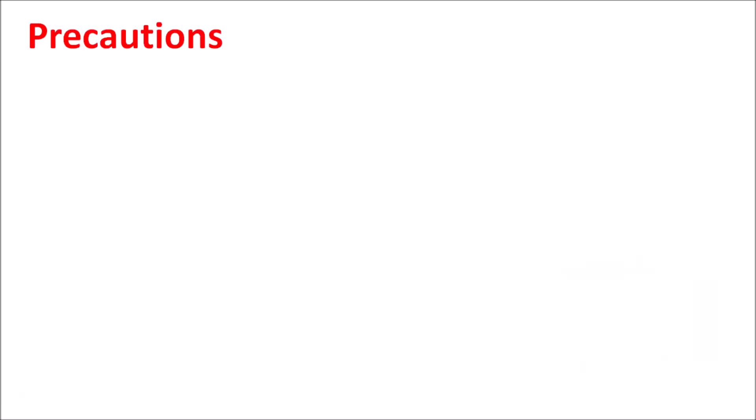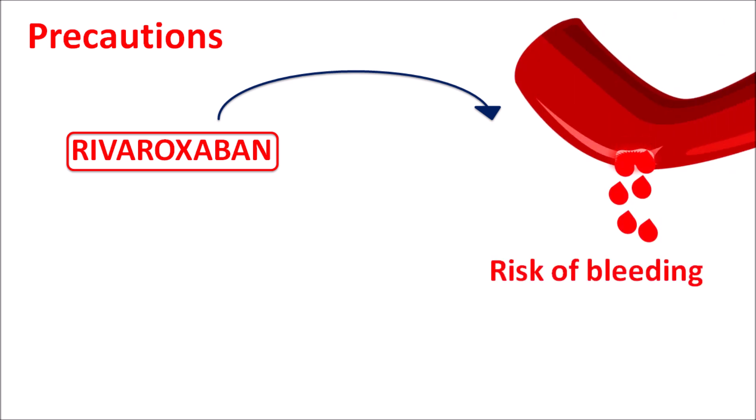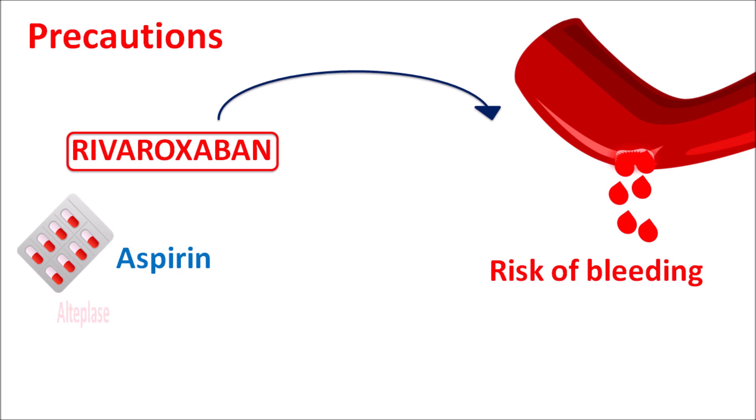Now let us look at the precautions of this drug. Since rivaroxaban is an anticoagulant, one important precaution is that this drug can increase the risk of bleeding in patients. This drug reduces factor 2a activity, thereby reducing clot formation. So this may result in increased risk of bleeding, which is more pronounced when combined with other drugs like aspirin, an antiplatelet agent. Similarly, fibrinolytics like alteplase and urokinase can also increase the risk of bleeding produced by rivaroxaban. So caution should be taken when rivaroxaban is combined with antiplatelets and fibrinolytics.